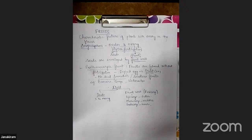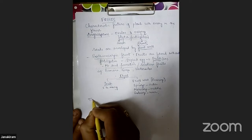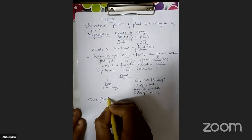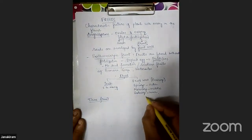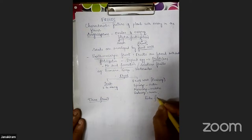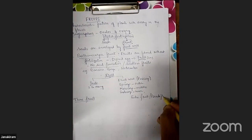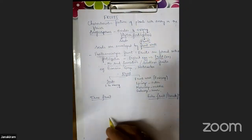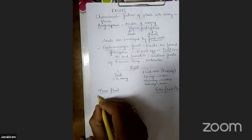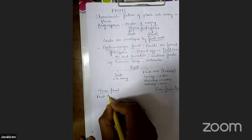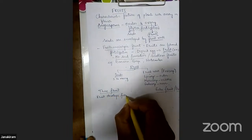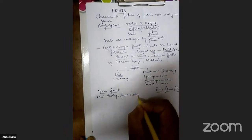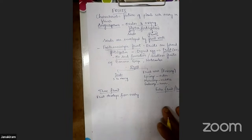There are two types of fruits: true fruit and false fruit, also called pseudo fruit. A true fruit is one that develops from the ovary. A false fruit develops from any other part of the flower along with the ovary.